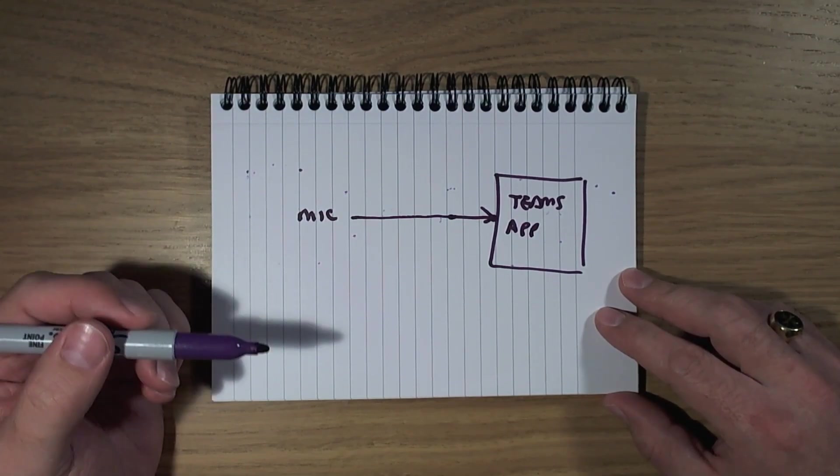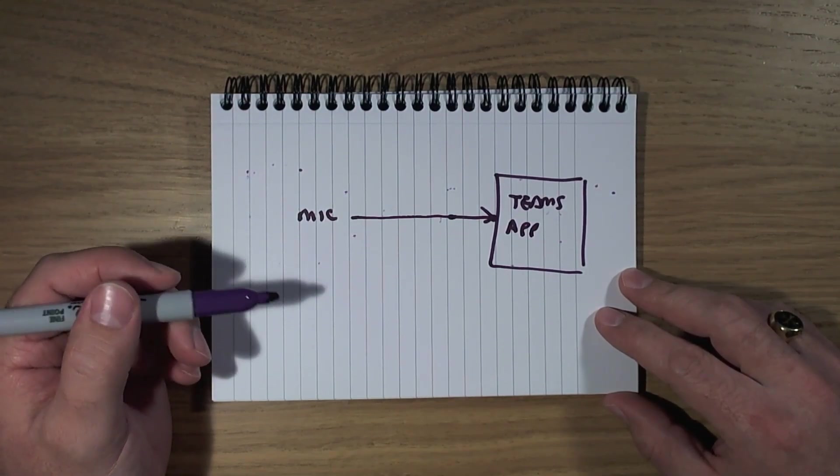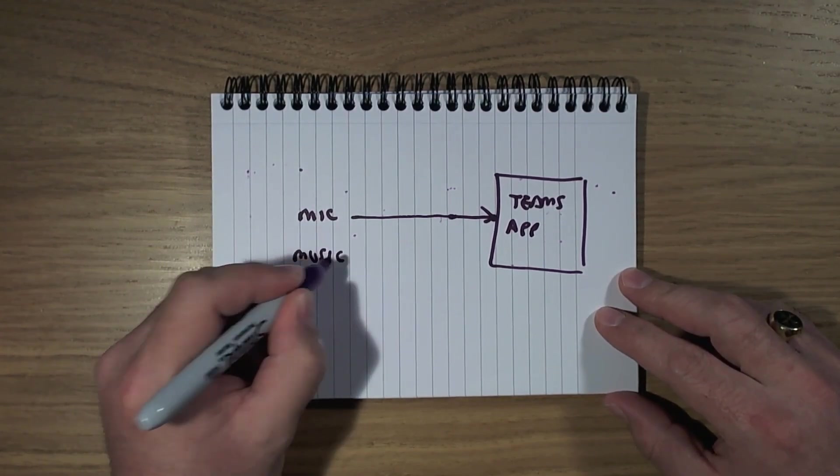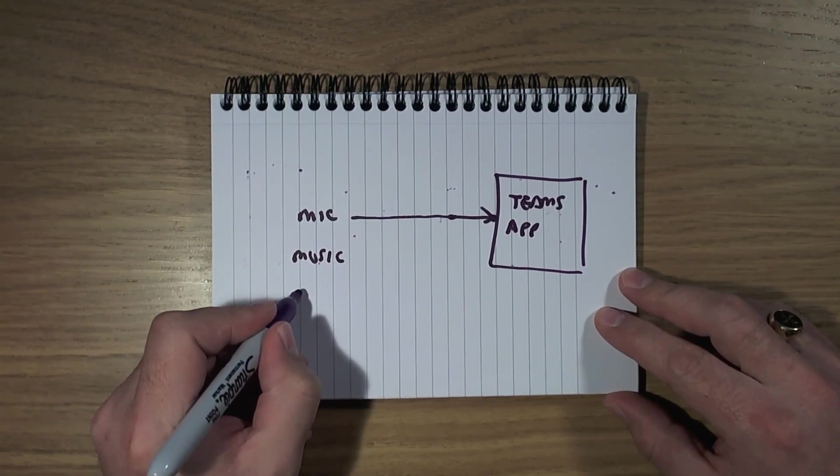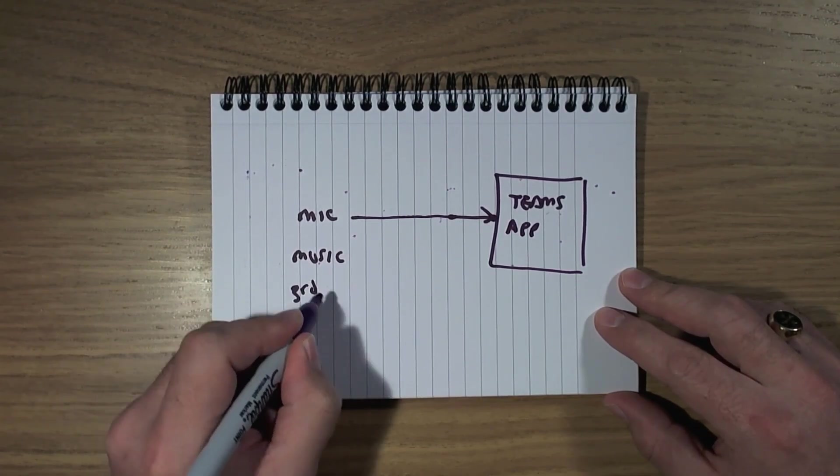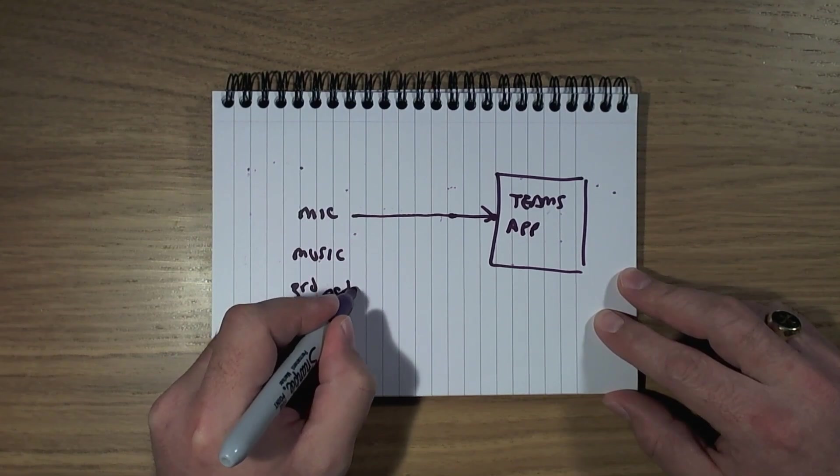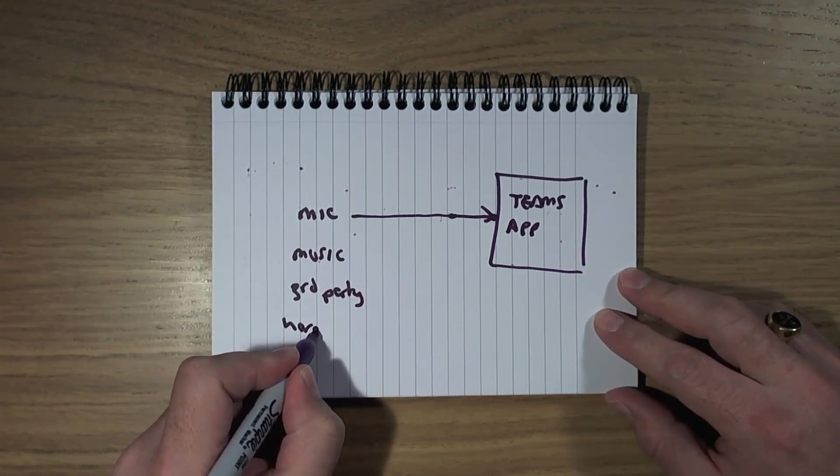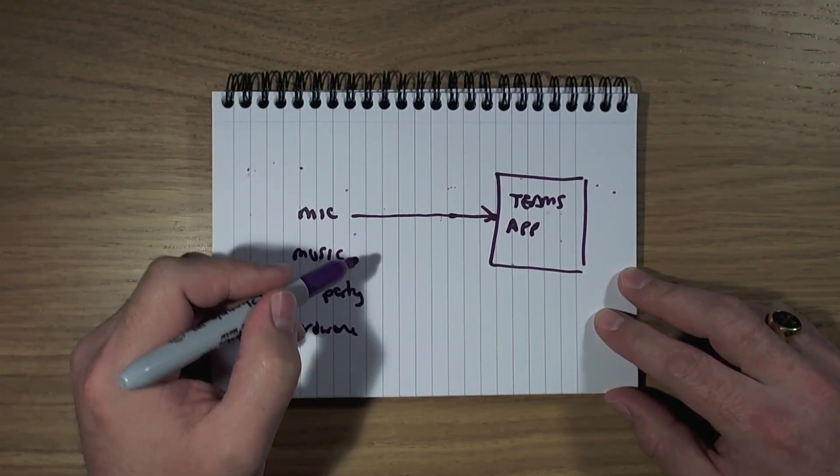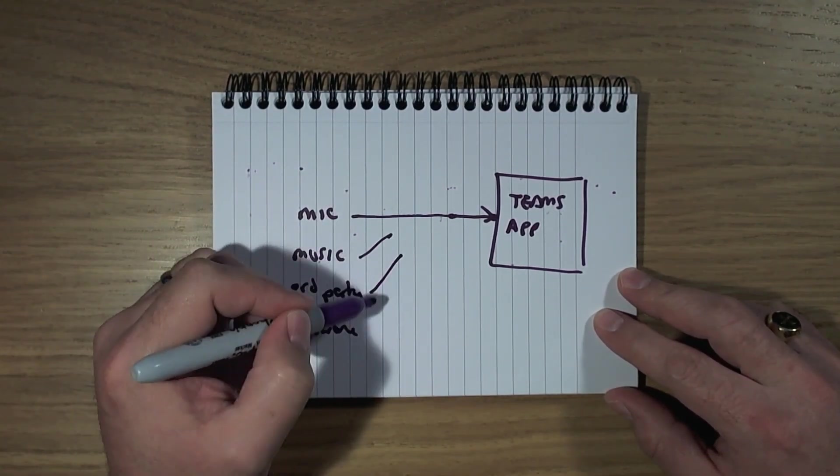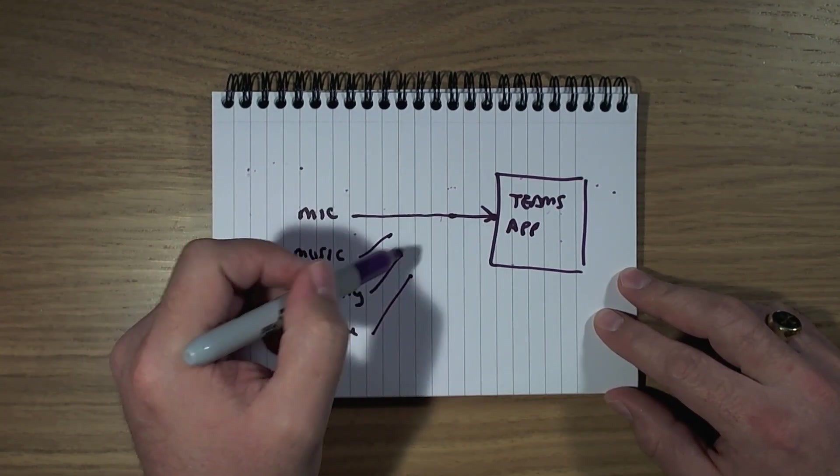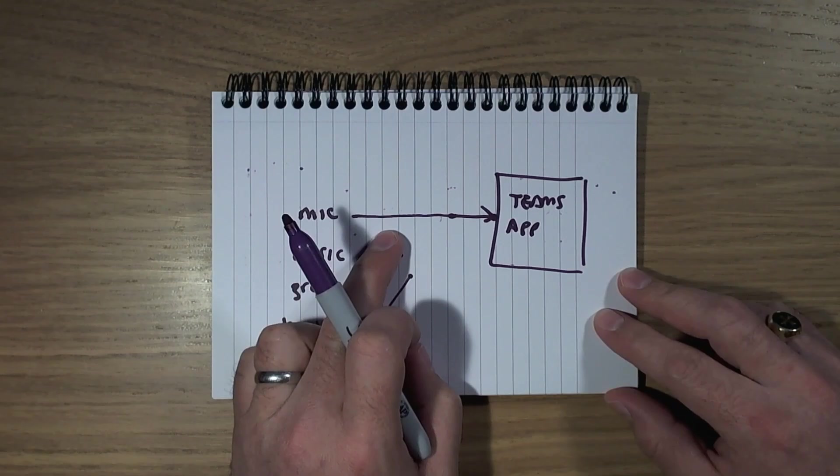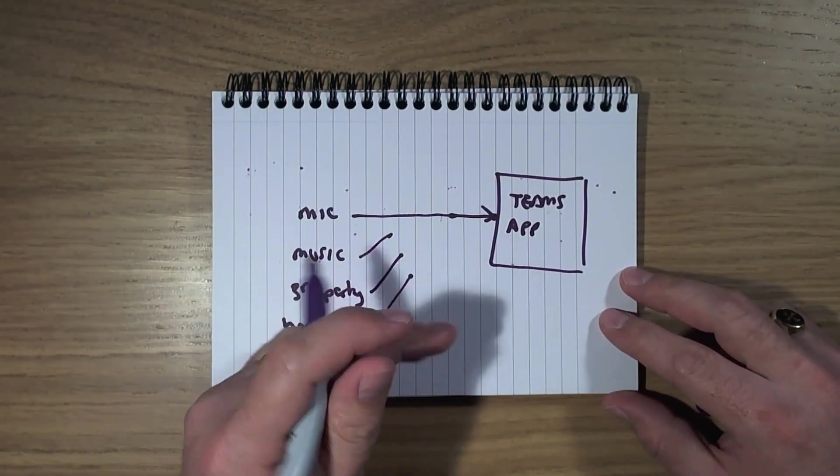But when we're running a Teams event, and we maybe want to add some production value, we might find that we want to add some music to the mix, or we might have some other application from a third party that we want to be able to pipe in. Maybe we're doing a demo, or we've got some other hardware device that we want to be able to bring into the mix. And of course, the problem is, they can't feed into Teams, because Teams is speaking to the microphone.